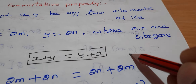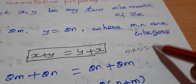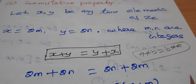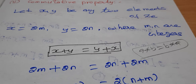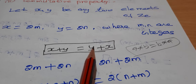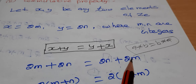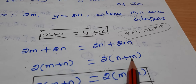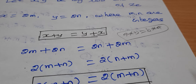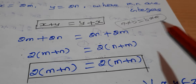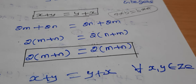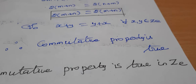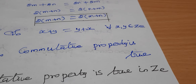For the commutative property, we need a star b = b star a. Here, x plus y = y plus x. Since x = 2m and y = 2n, m + n = n + m. So commutative property is true for even integers.